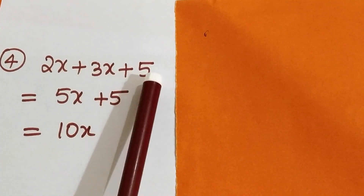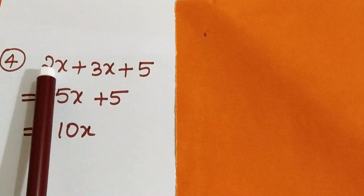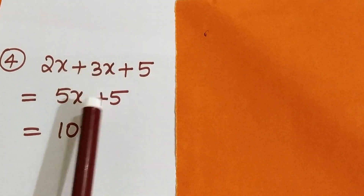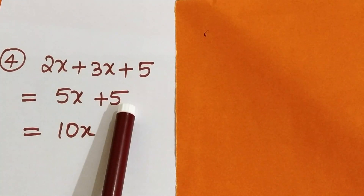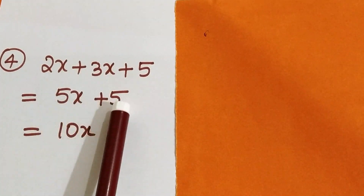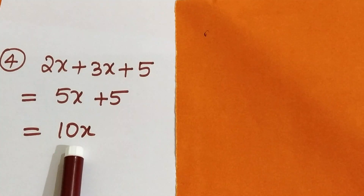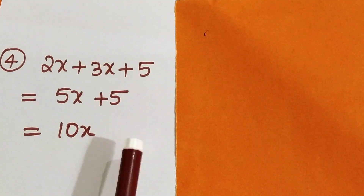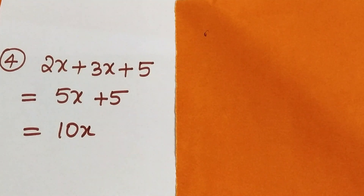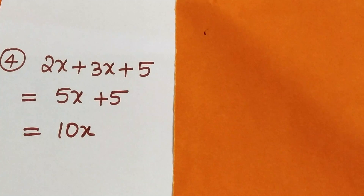Next: 2X plus 3X plus 5. Students write 2X plus 3X as 5X plus 5, then combine 5X plus 5 as 10X. This is a wrong procedure. We will see the correct procedure.